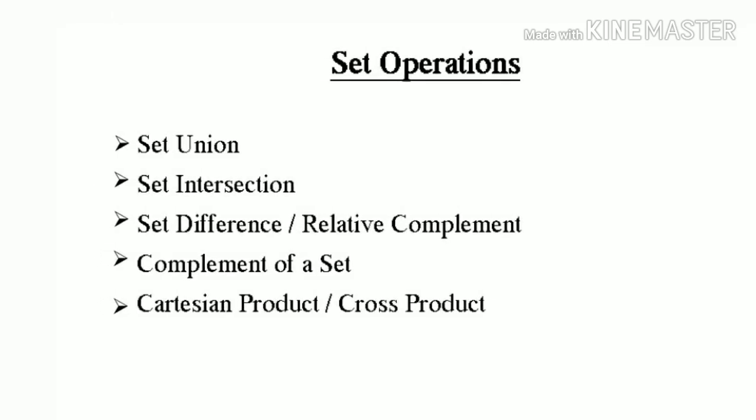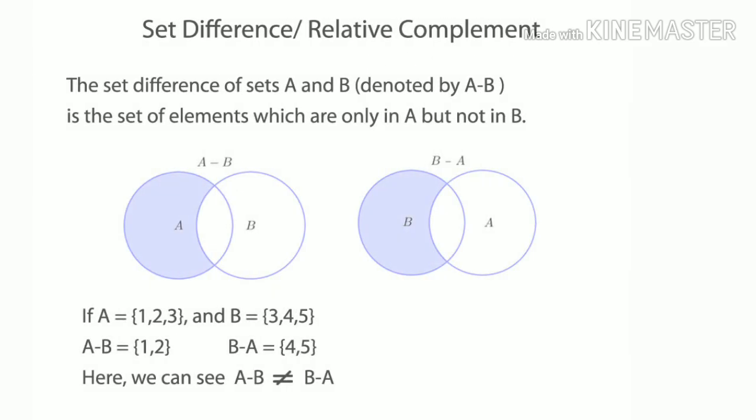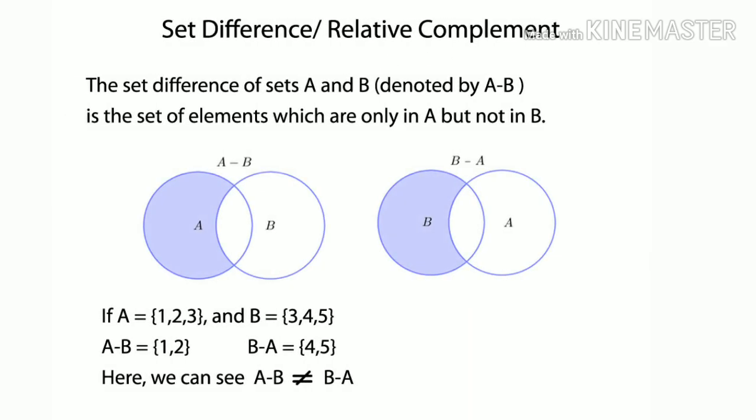Next one is set difference. The set difference of sets A and B, denoted by A minus B, is the set of elements which are only in A but not in B. If A equal to {1, 2, 3} and B equal to {3, 4, 5}, then A minus B equal to {1, 2} and B minus A equal to {4, 5}. Here we can see A minus B is not equal to B minus A.